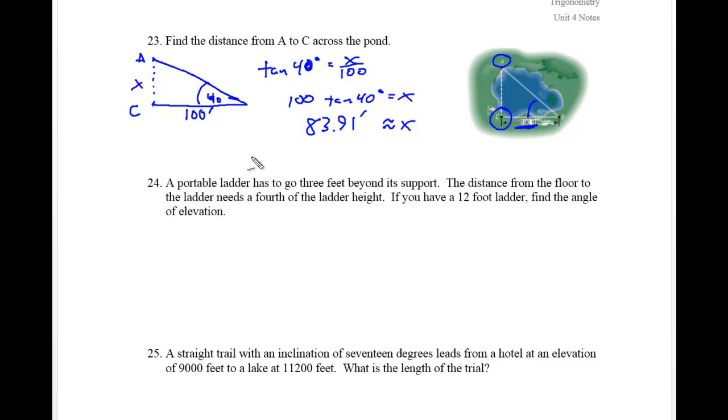All right, let's take a look at number 24. A portable ladder has to go three feet beyond its support. All right, so what we're seeing there is that if we have a ladder, the support is here, right? And if you've used a ladder before, you got to make sure your ladder isn't just touching just right at that spot or else it will slide out and fall down. So you need this three feet beyond its support.